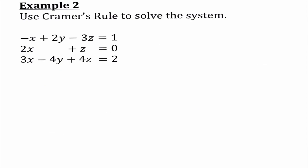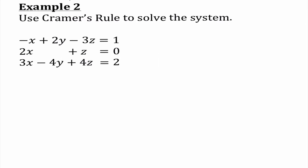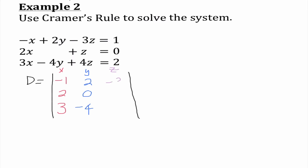Our final example of the day. This one is going to take a little longer because 3 by 3s are basically awful and take a long time, but it's not that tough even if it takes a while. I'm going to find determinant D. The first column is our x coefficients: negative 1, 2, 3. The second column is y coefficients: 2, 0, negative 4 — that zero should make us happy because we'll get products of 0. The last column is the z's: negative 3, 1, 4.